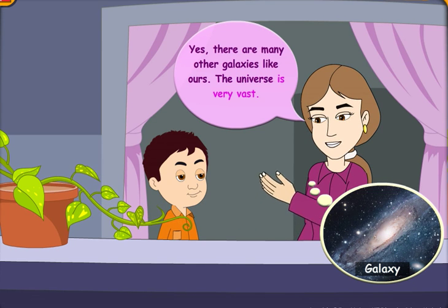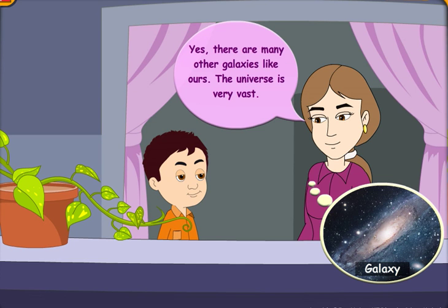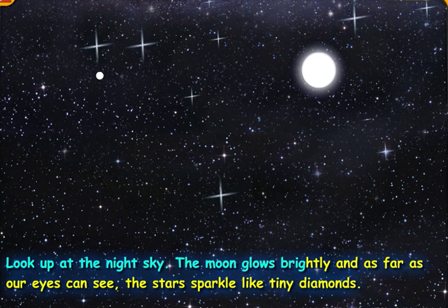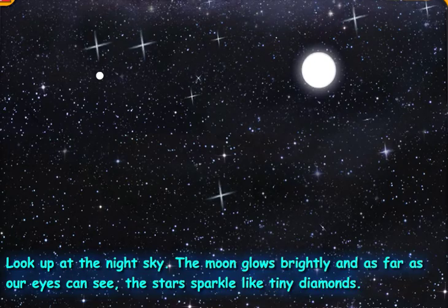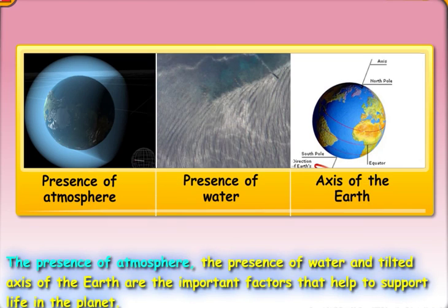The universe is very vast. Look up at the night sky. The moon glows brightly, and as far as our eyes can see, the stars sparkle like tiny diamonds. We can also see that the Earth has a fantastic variety of life. The presence of atmosphere, the presence of water, and filtered access of the Earth are the important factors that help to support life on the planet.